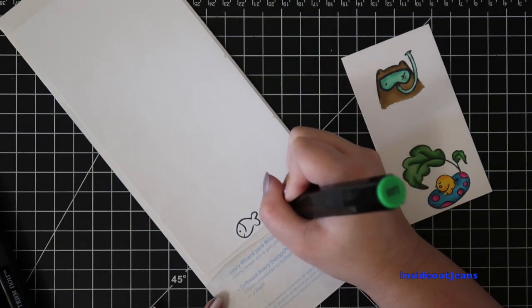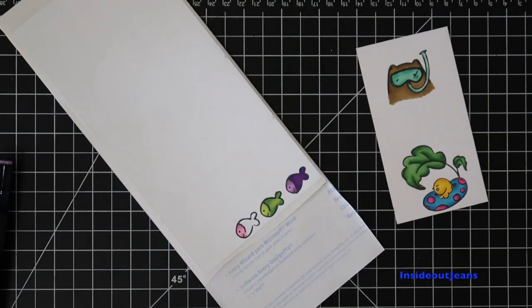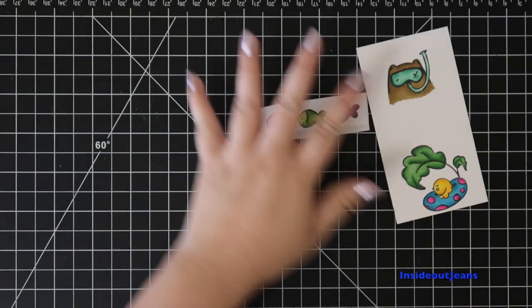Looking back, since I decided to use vellum for the shaker part, I really didn't need this to be on sticker paper because I'll be adhering it directly onto the vellum that you'll see later.